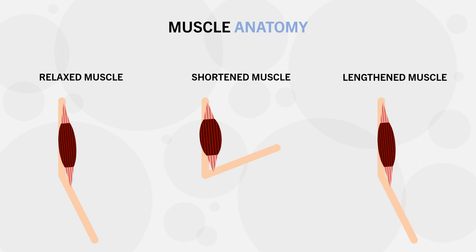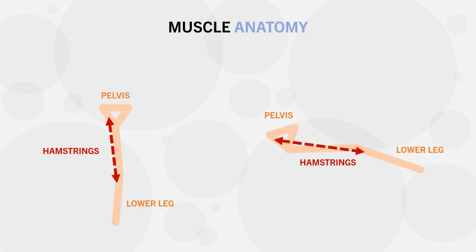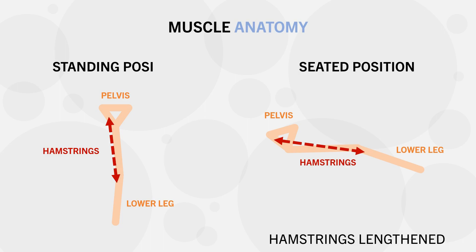Furthermore, most major muscles don't just move a single joint — they usually act to move two or more joints. For example, the hamstrings originate on the pelvis and insert onto the tibia and fibula, which are the bones of the lower leg. This means they cross both the hip joint and the knee joint and act to move both. So if we sit down, the hamstrings will be lengthened at the hip, and if we stand up, they will be shortened at the hip, regardless of what happens at the knee.